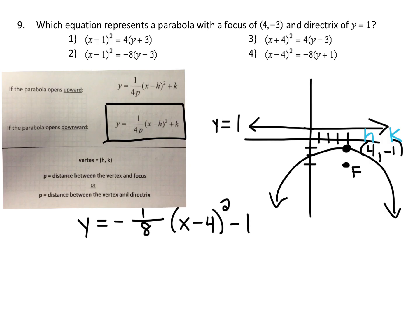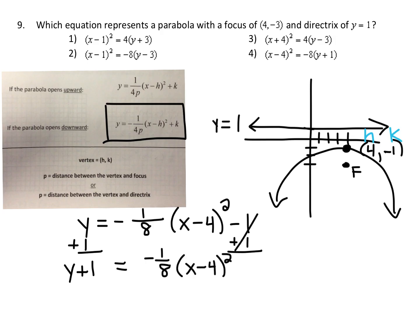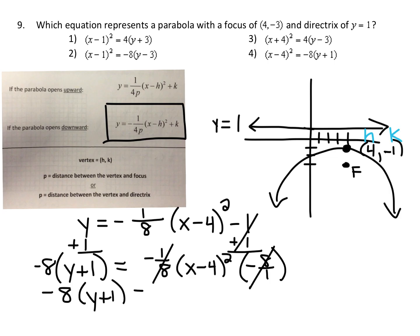Let's show how to rearrange into the isolated form the answer choices use. Add 1 to both sides, leaving y plus 1 equals negative one-eighth times (x minus 4) squared. Then multiply both sides by the reciprocal of negative one-eighth, which is negative 8. The negative one-eighth and negative 8 cancel, leaving negative 8 times (y plus 1) equals (x minus 4) squared. That matches choice four — so choice four is our answer.